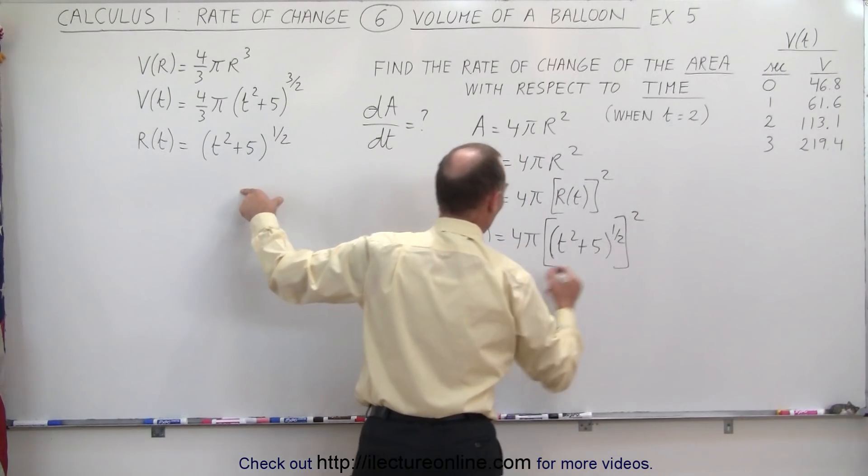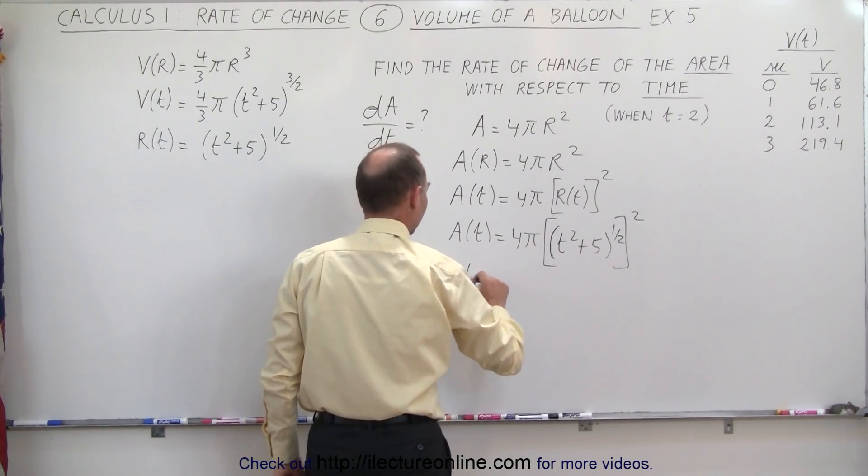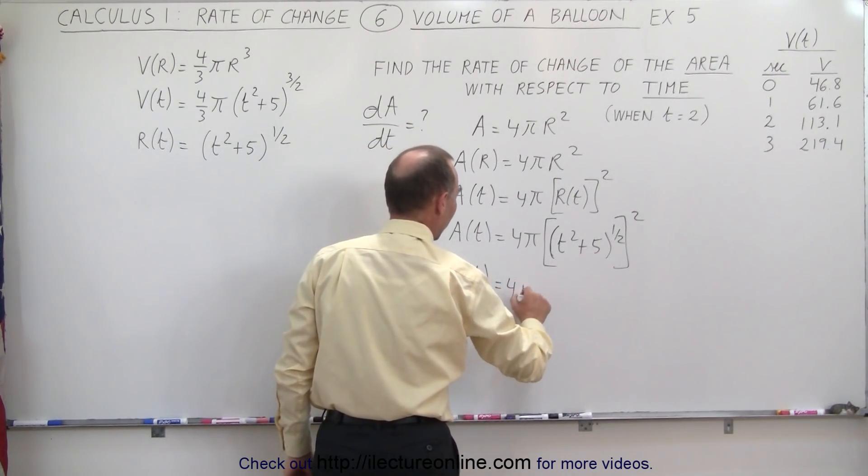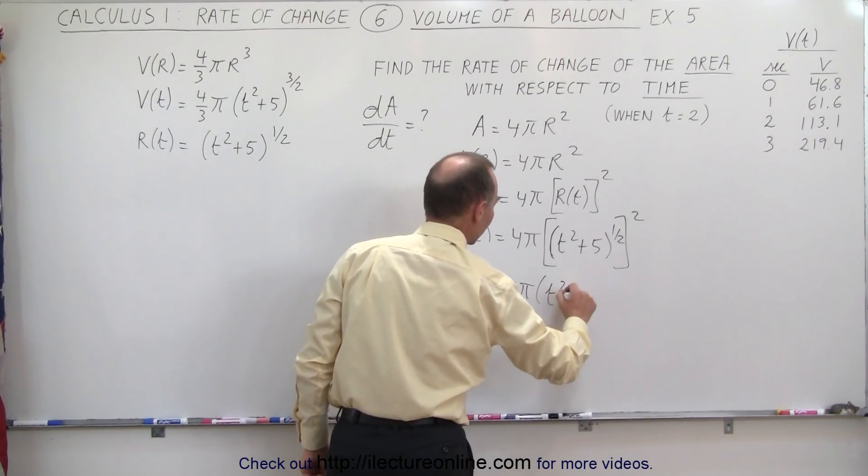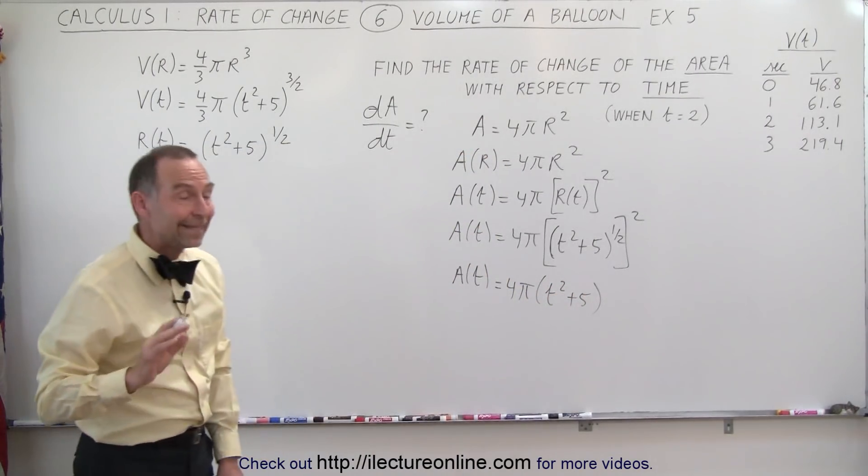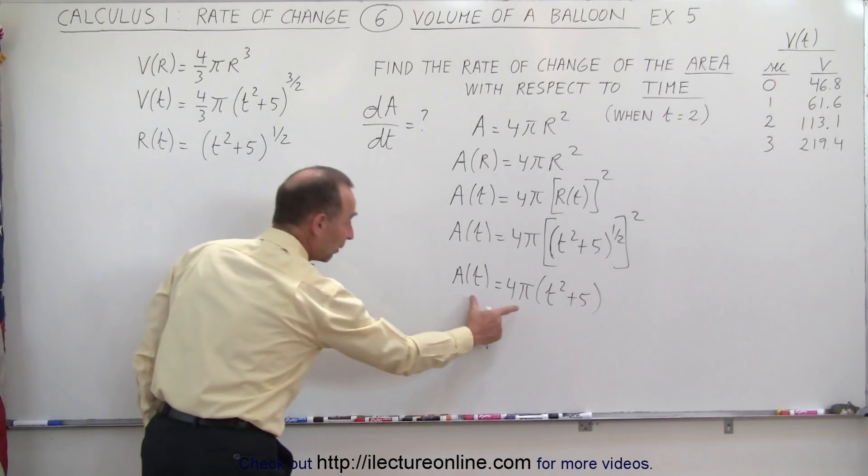Or we can say that the area as a function of time is equal to 4π times (t²+5). And now, to find dA/dt, we simply have to take the derivative of that.